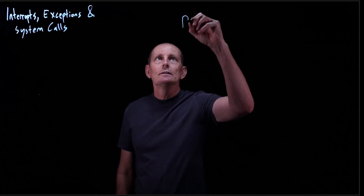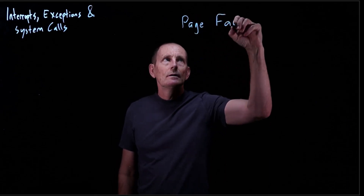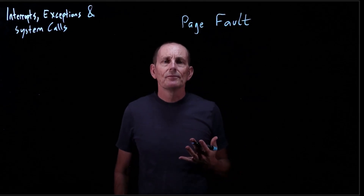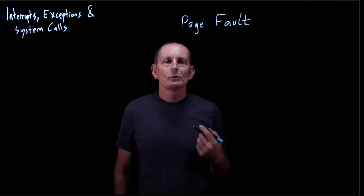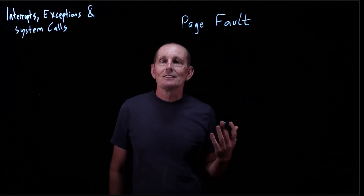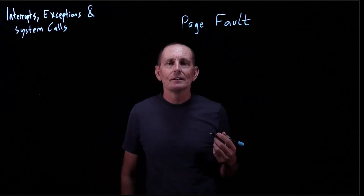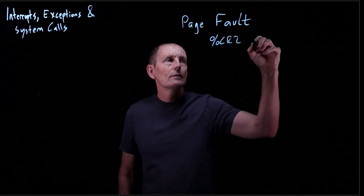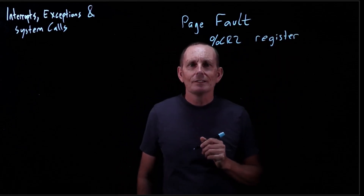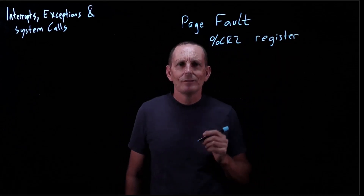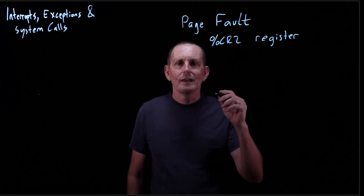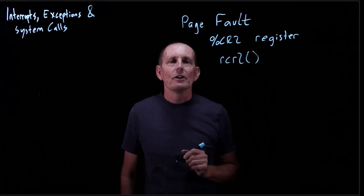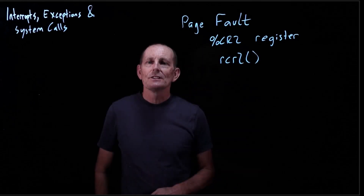Let's look at the page fault exception in particular. For a page fault, we're going to want to know some information. One thing we're going to want to know is which virtual address caused the exception — which one failed. We basically get that from the CR2 register. If we're using XV6, we can go ahead and obtain the register with CR2. So we know the address that was faulting.